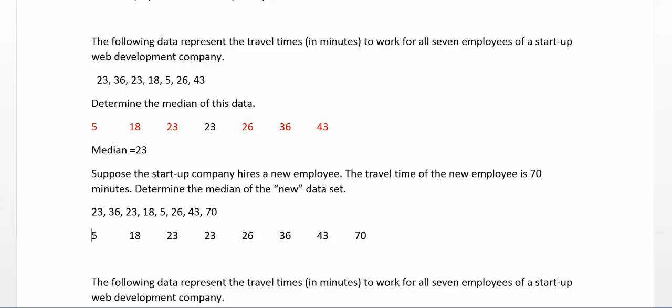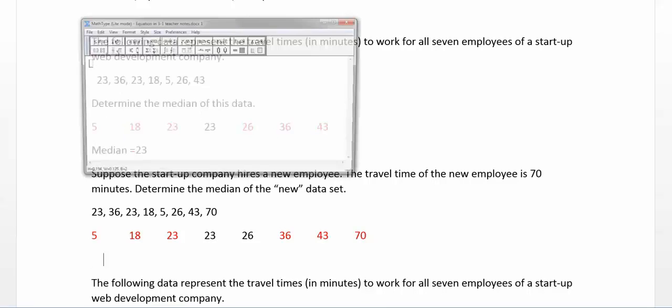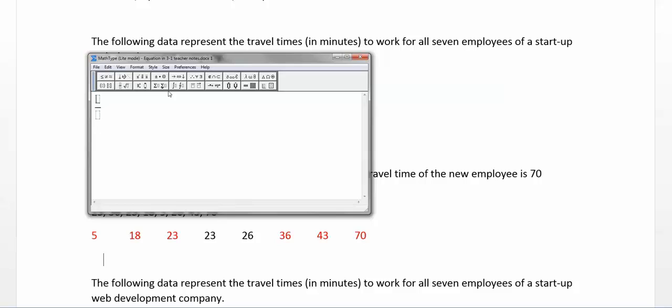Okay, so as I start partnering them up, so 5 and 70, 18 with the 43, the 23 with the 36. Okay, so we get to here, and now I don't have a middlemost, I have two in the middle. So in this case, the median is going to be the average of the middle two. So I'm going to add them up, and divide it by 2, and that will represent the new median of the data. And that would be 24.5.